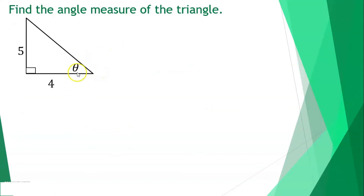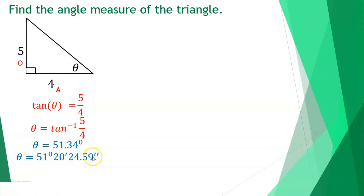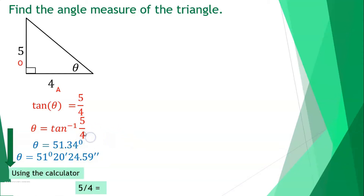Given a right triangle with reference angle theta, where 5 is opposite and 4 is adjacent: tan(theta) = 5/4, so theta = arctan(5/4). Using a calculator: input 5/4, press equals, then shift-tan, then equals, then degree-minute-second key. Result: theta ≈ 51.34°, or 51°20'24.59''.